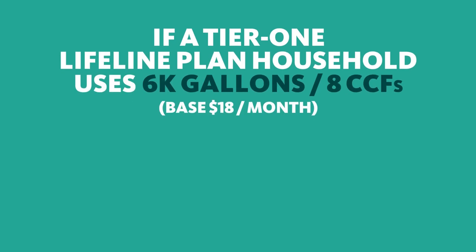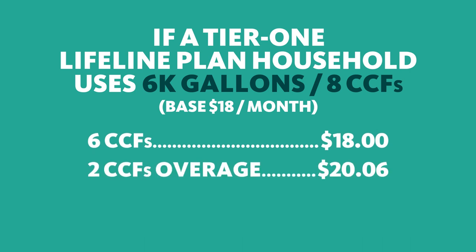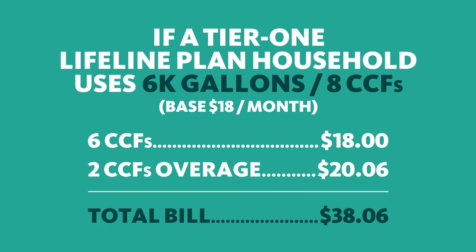For example, if a Tier 1 Lifeline Plan household that has a base of $18 monthly bill uses 6,000 gallons of water or 8 CCFs in a month, the customer will owe $18 plus $20.06 for the additional 2 CCFs of water and sewer, for a total of $38.06.